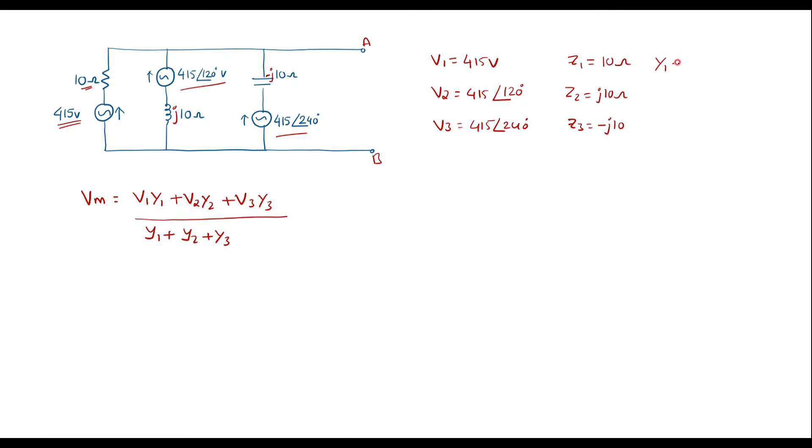With this we can find Y1. Y1 is equal to reciprocal of Z1 that is 1 over Z1 which is equal to 1 over 10 that is 0.1.